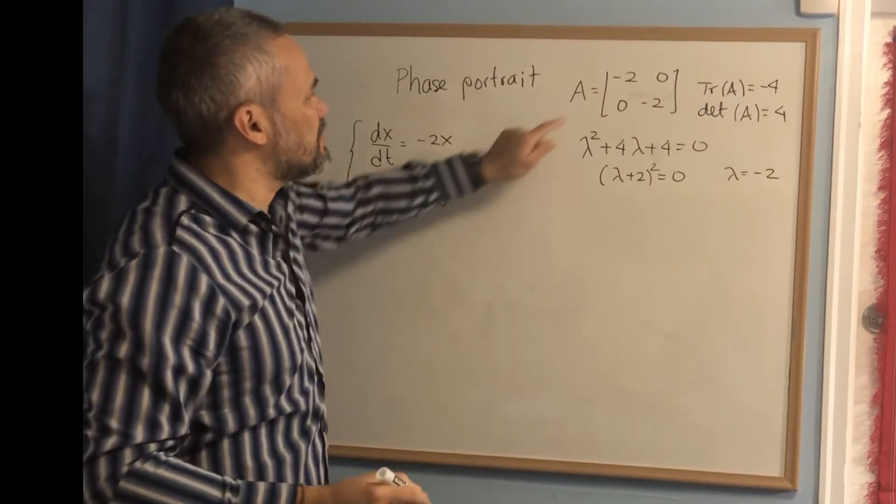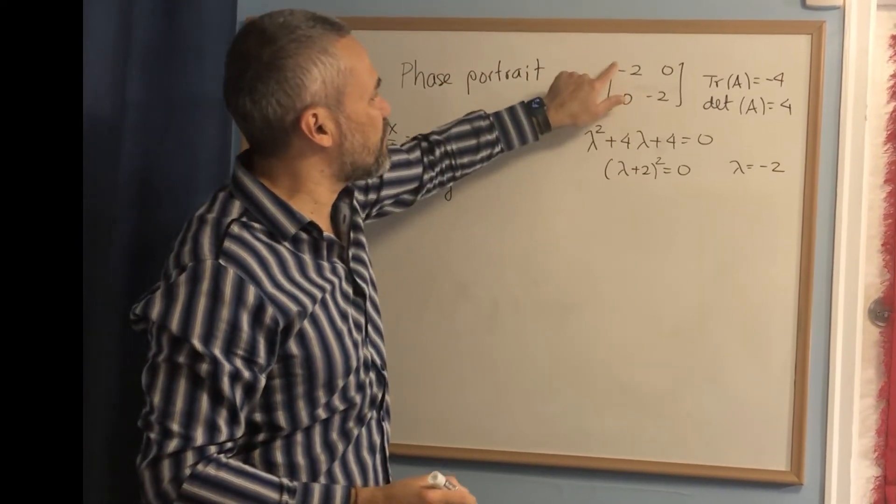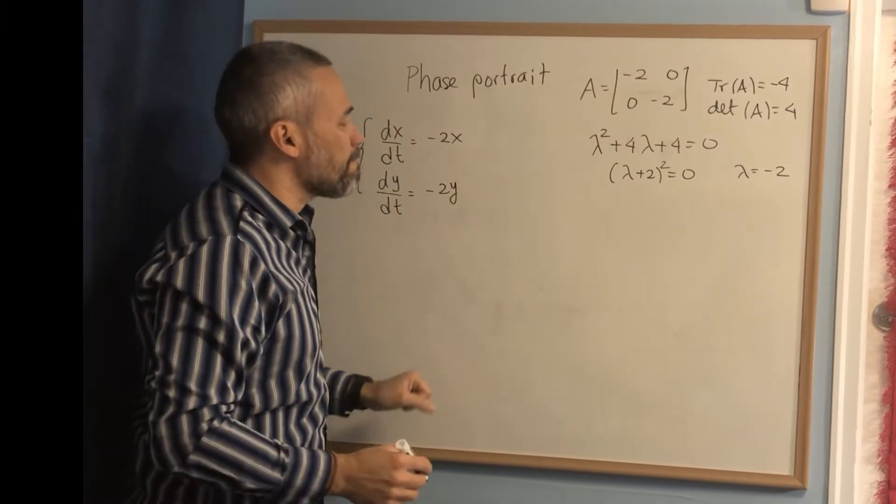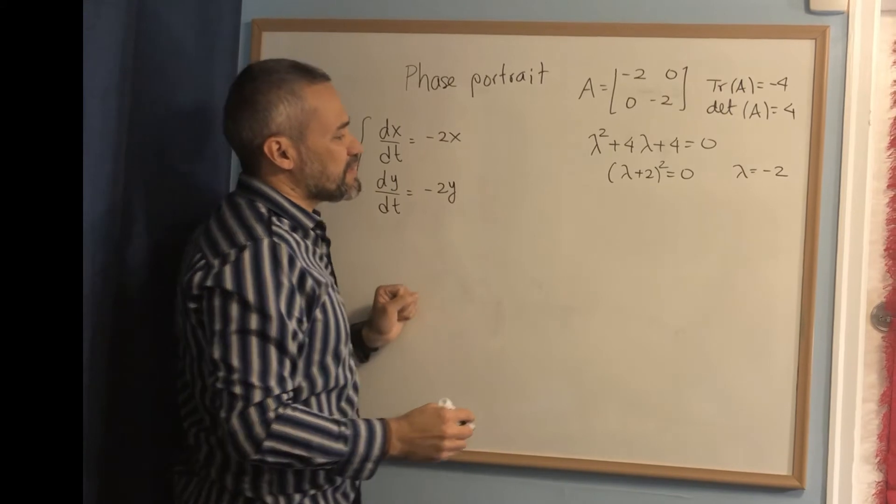We could have gotten this because this is a diagonal matrix. And for diagonal matrices, the eigenvalues are those elements in the diagonal.